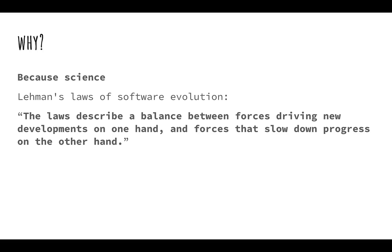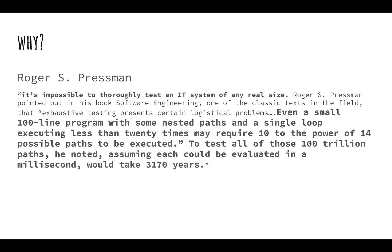Why is the operations moat king? Because of science. Lehman's Laws of Software Evolution have been around since the 70s and describe the balance between forces driving new development and forces that slow down progress. The more code you add, the harder it becomes to add more code — complexity grows, and if you don't engineer the system correctly it will collapse beneath the weight of that complexity. Roger S. Pressman added important work showing it's essentially impossible to thoroughly test an IT system of any real size — a small 100-line program generated a trillion paths that would have taken over 3,000 years to fully test.